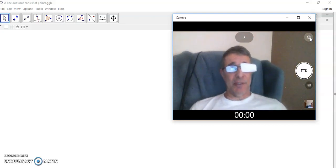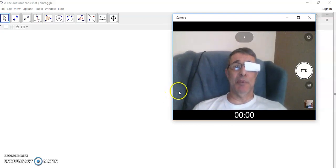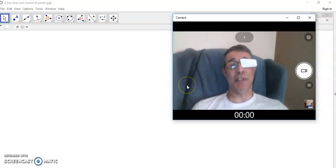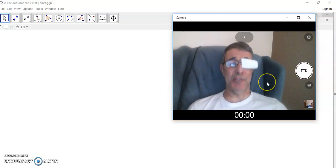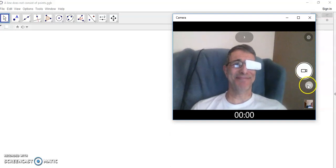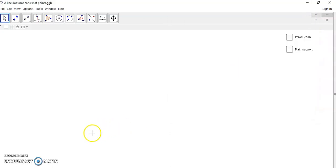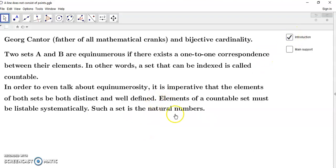George Cantor is the father of all mathematical cranks and he was the one who came up with this idea. It's actually a pretty useless idea, and this is what I'm going to discuss now. So let's begin. What did George Cantor say? He said that given any two sets A and B, they are equinumerous if there exists a one-to-one correspondence between their elements.